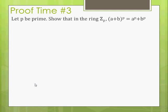Third proof — an interesting problem. Let p be prime, and we have a ring Z sub p, that is Z mod p. For instance, p could be seven, so Z mod 7 would be {0, 1, 2, 3, 4, 5, 6}. That's a ring. We're trying to show that (a + b)^p equals a^p + b^p.